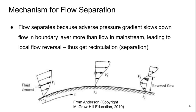So this gets at the fundamental mechanism for flow separation. The flow separates because the adverse pressure gradient slows down the flow in the boundary layer more than the flow in the mainstream. Leading to local flow reversal, where we thus get recirculation, which is essentially flow separation.